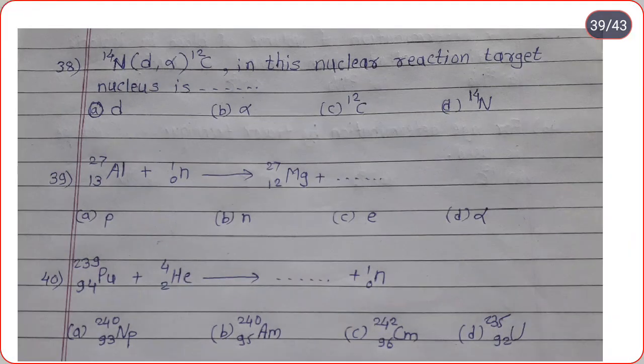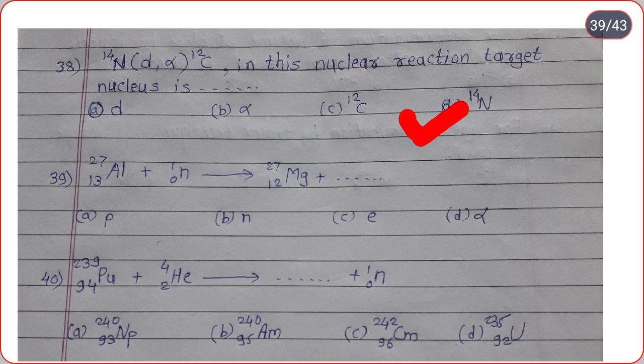The next question: representation of nuclear reaction — nitrogen-14, in bracket, deuterium comma alpha particle, bracket complete, carbon-12. In this nuclear reaction, target nucleus is? Correct option is option D, nitrogen-14 is the target nucleus, deuterium is the projectile, alpha particle is the ejectile, and carbon-12 is the recoil nucleus or daughter element.